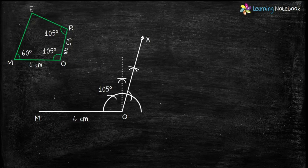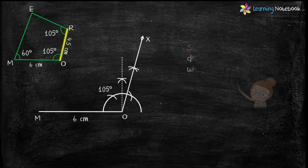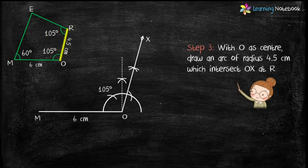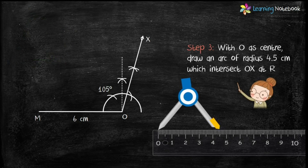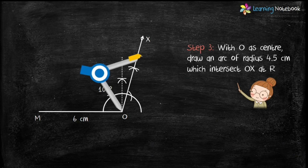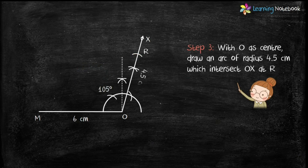Now in step 3, let's draw side OR which is given as 4.5 cm. For this, open the compass with radius 4.5 cm and with O as center, draw an arc to intersect ray OX at point R.